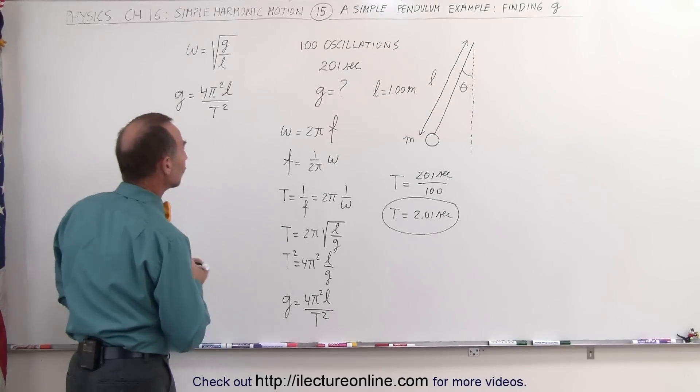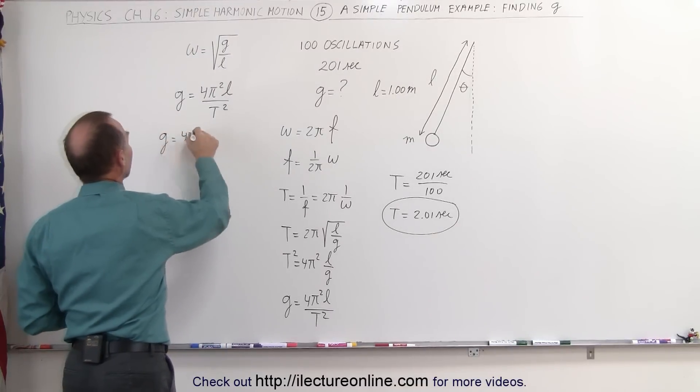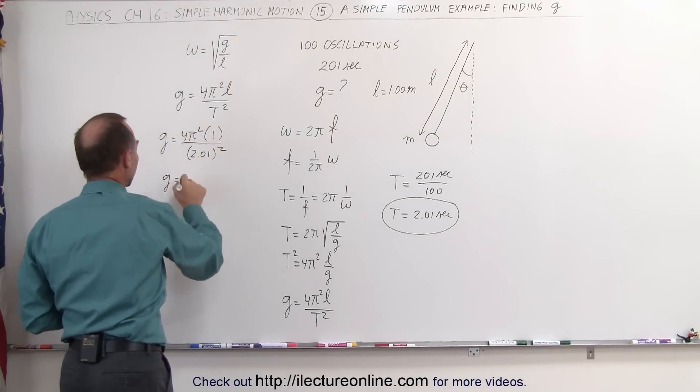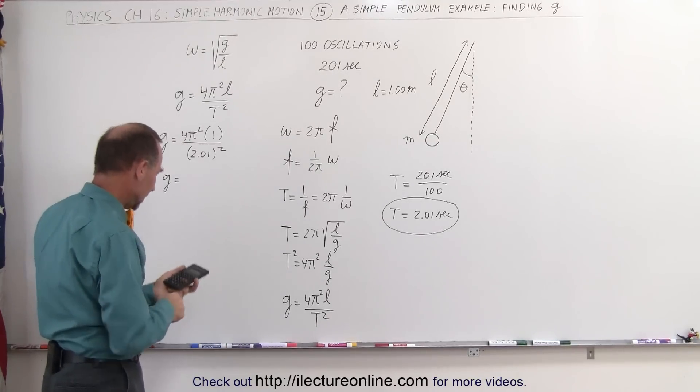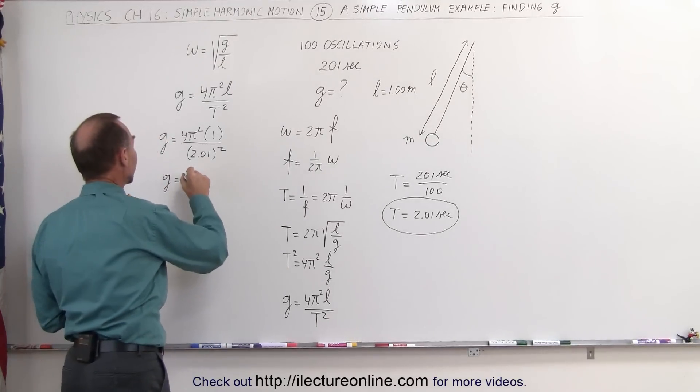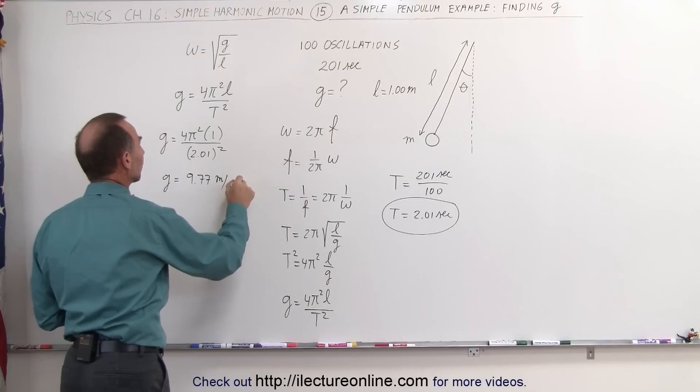Plugging all that information into the equation, we can then see that g equals... and there the acceleration due to gravity would be 9.77 meters per second squared.